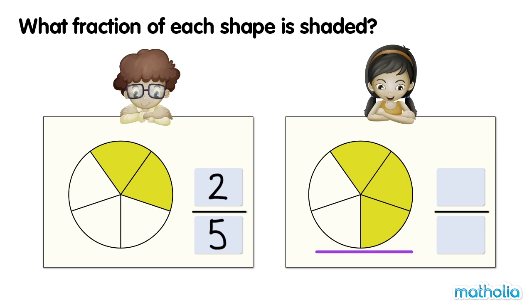This circle is also divided into five equal parts. Three parts are shaded. Three fifths of the circle are shaded.